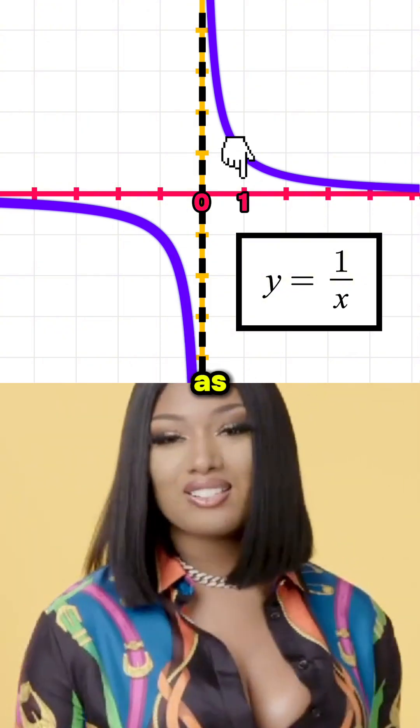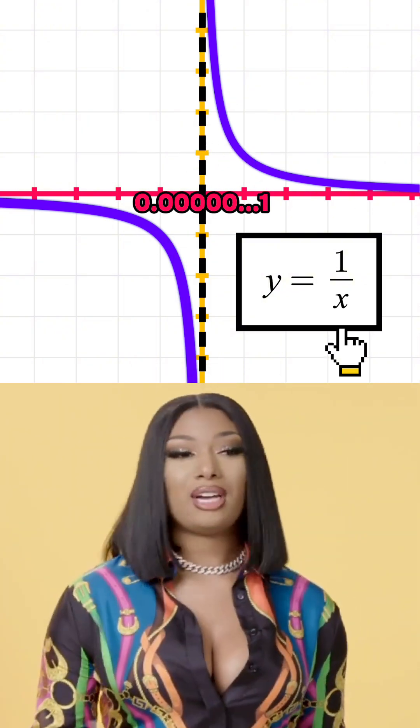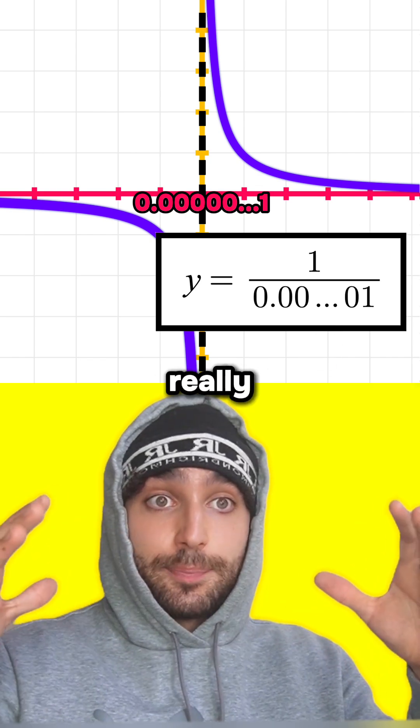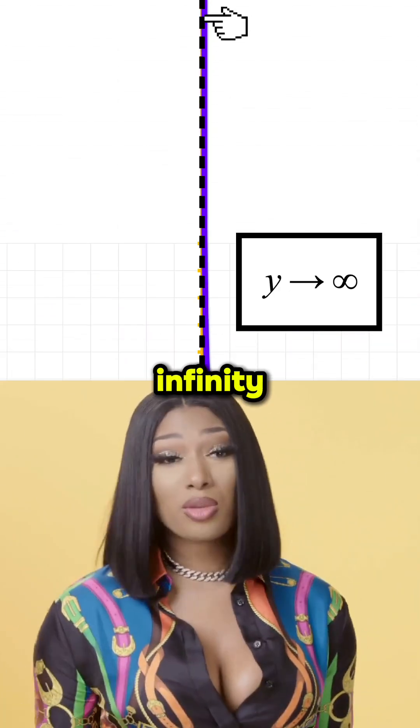But look what happens right next to it. As x gets real close to 0, 1 over x becomes 1 divided by like the smallest number ever. Oh, so overall it gets really big. Never endingly big, that's why the graph shoots up to infinity.